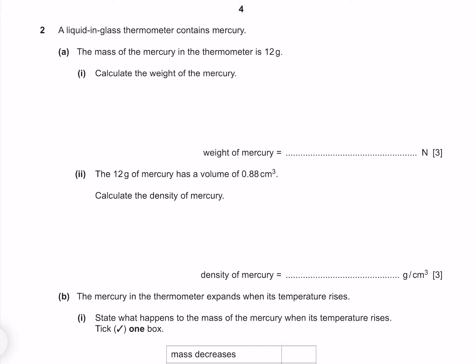A liquid in glass thermometer contains mercury. The mass of the mercury in the thermometer is 12 grams. Calculate the weight of the mercury. Our weight force is equal to the mass times the gravitational acceleration. Where our mass is 12 grams or 0.012 kilograms, and our acceleration due to gravity is 10, which gives me 0.12 newtons.